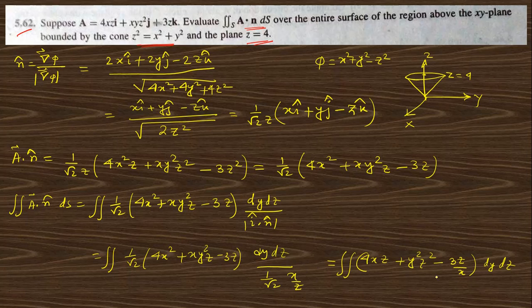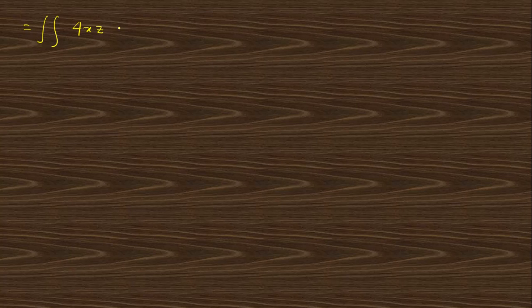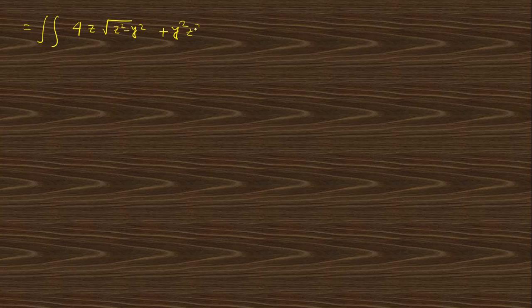Replacing x using the cone equation x² = z² − y², the expression becomes (4z)(z² − y²)^(1/2) + y²z² − 3z² terms, all divided by √2, integrated as dy dz.